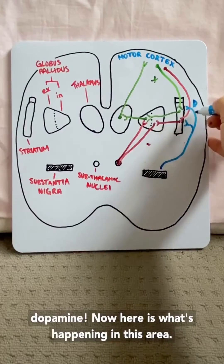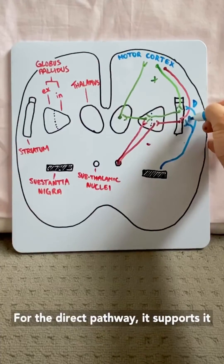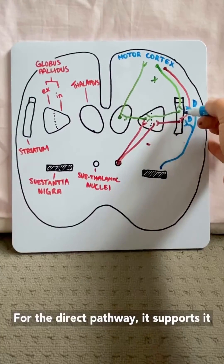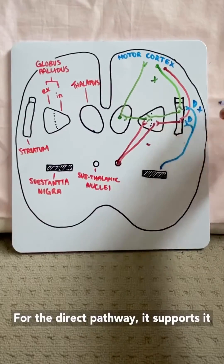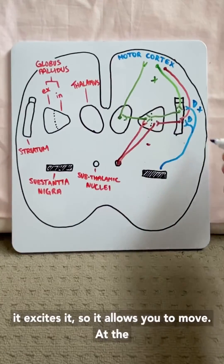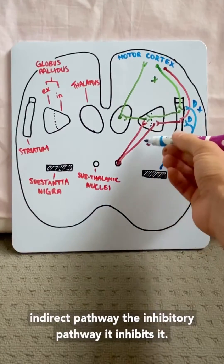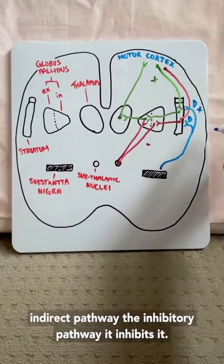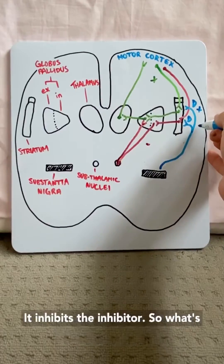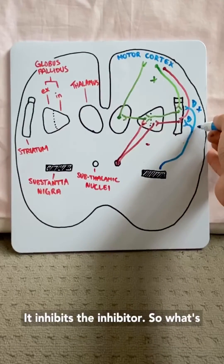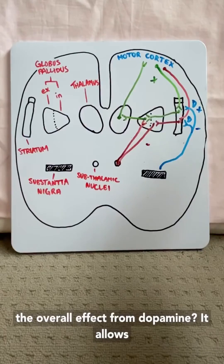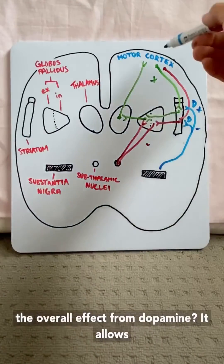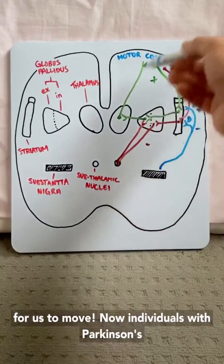Now here's what's happening in this area. For the direct pathway, dopamine supports it and excites it, so it allows you to move. At the indirect — the inhibitory — pathway, it inhibits it. It inhibits the inhibitor. So what's the overall effect from dopamine? It allows us to move.